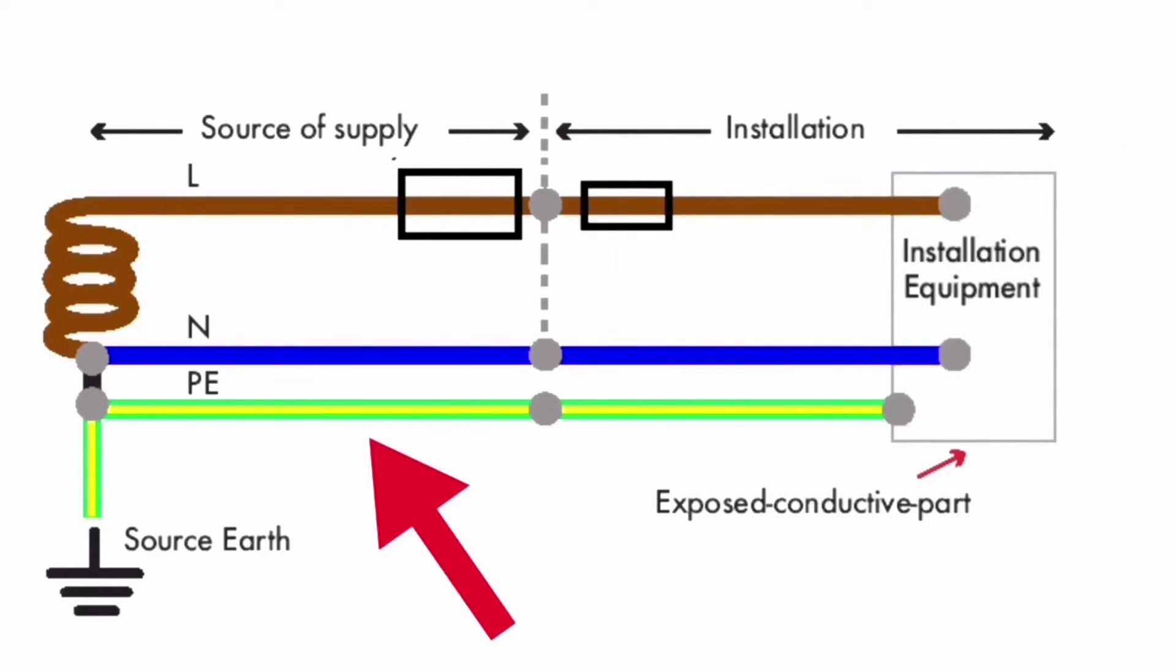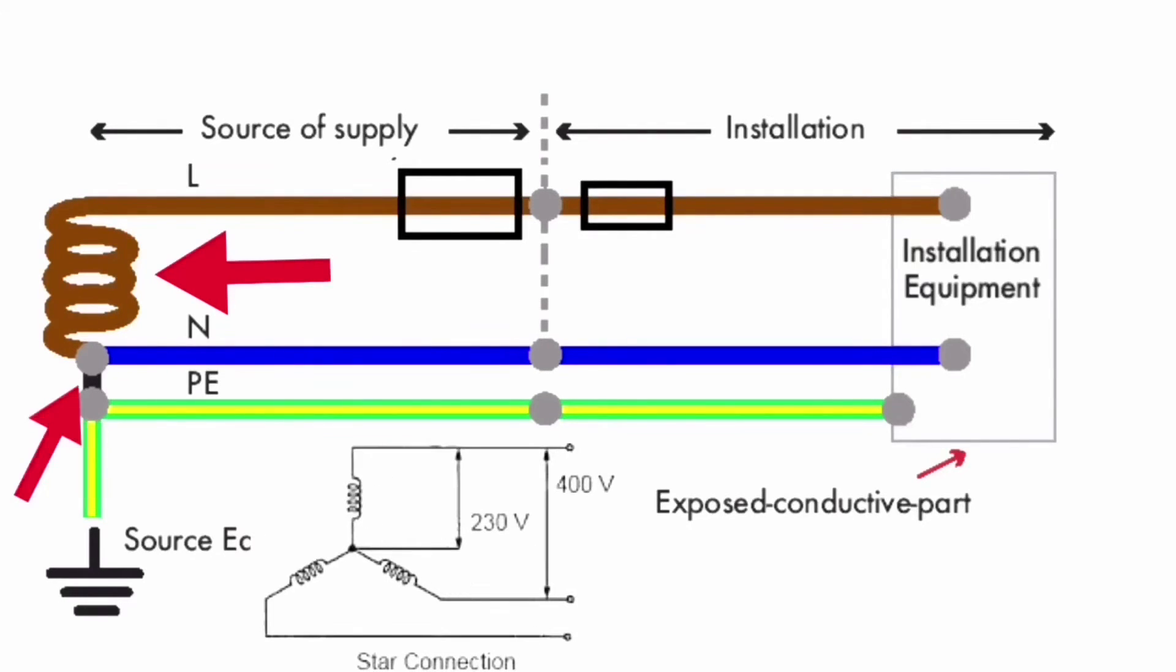This cable often comes to installations underground but can also come overhead. This drawing also only shows one of the three star connected windings on the Supply Authorities side, as well as the centre tap point to earth.